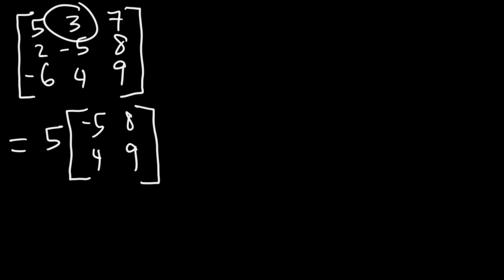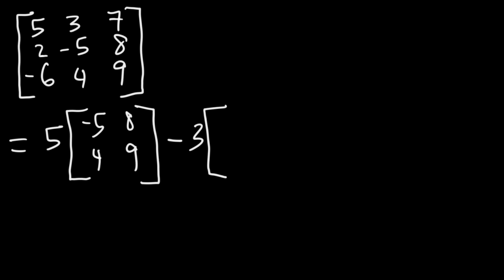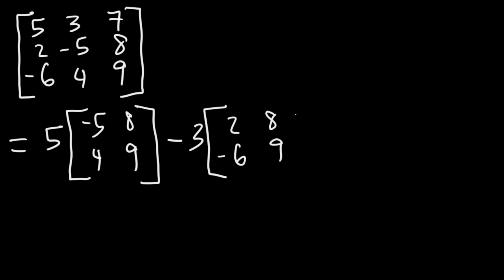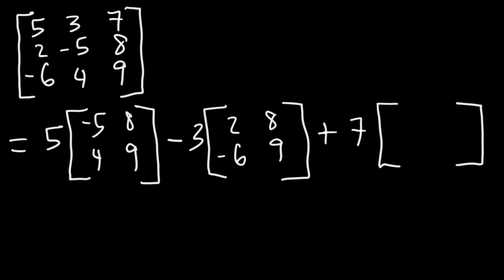Next, let's write the second element in the first row, and don't forget to alternate the signs. So this one was positive 5, the next one is going to be negative. And then we'll write this element, which is positive 3. Now, 3 is in the first row, second column, so it leaves behind the numbers 2, negative 6, 8, and 9. And then plus the last element in the first row, which is 7. And 7 is in the first row, third column, leaving the numbers 2, negative 6, and then negative 5, 4.